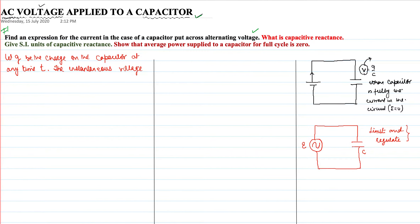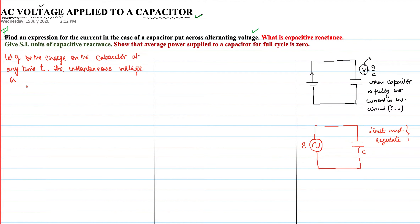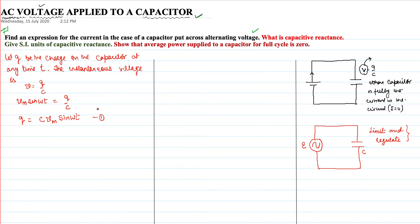The instantaneous voltage across the capacitor is v equal to q/C. From Kirchhoff's loop rule, Vm sin(ωt) = q/C. So you can calculate q = CVm sin(ωt). Take this as equation number 1.